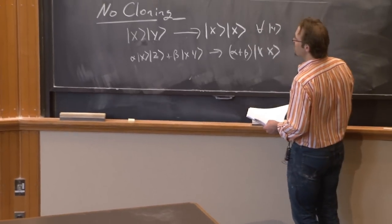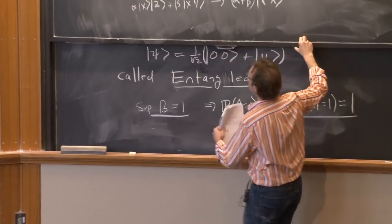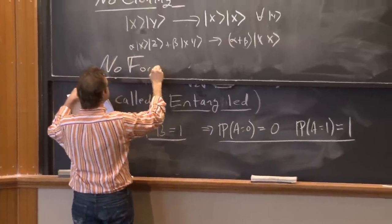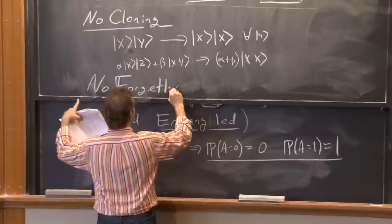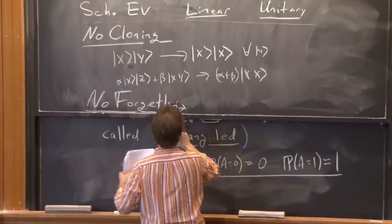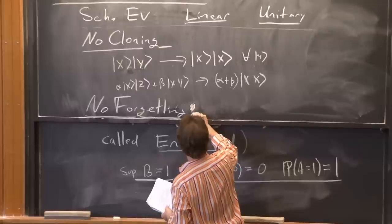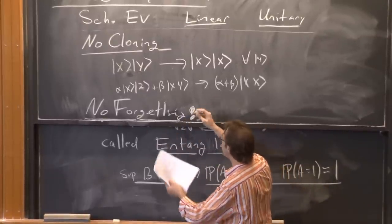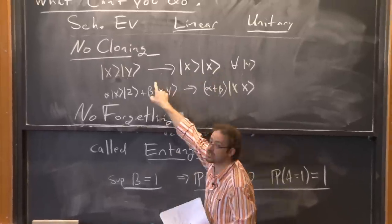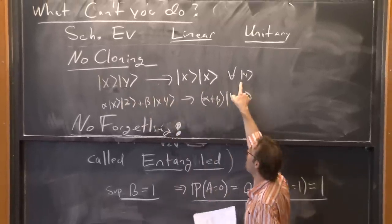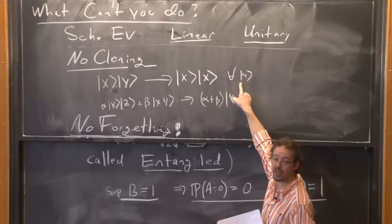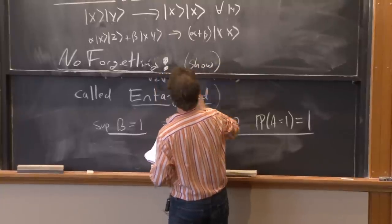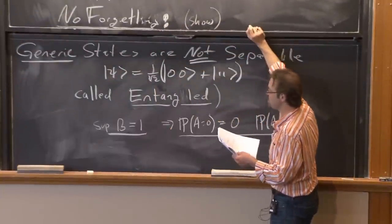A related thing is that there's no forgetting. Quantum evolution never forgets anything. The cloning example would be forgetting — you forgot what was in state y. You can never do that. I leave this as a challenge to you to prove — it's a simple extension of the same logic.